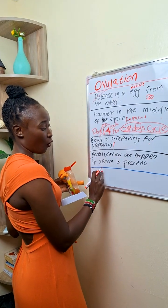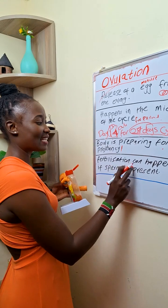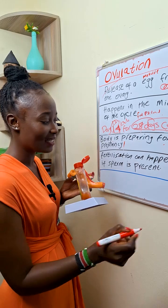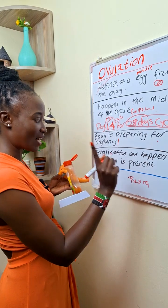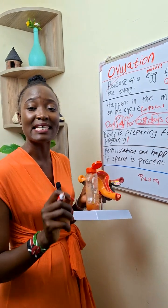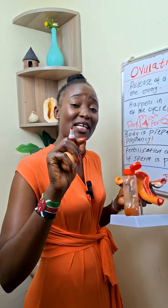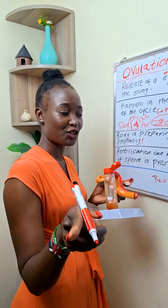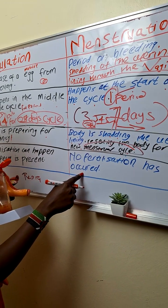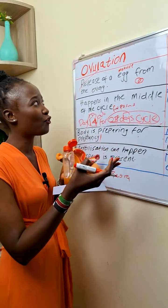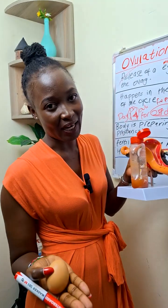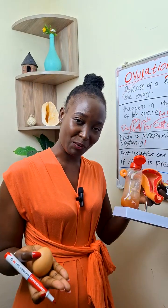Difference number four: during ovulation, fertilization can happen if sperm is present, and when fertilization has happened, that woman therefore becomes pregnant. During ovulation, fertilization can happen if sperm is present. If the sperm is not present, you now go to menstruation. During menstruation, no fertilization has occurred. So for ovulation and menstruation, they work hand in hand — when one has not happened, the other will happen.